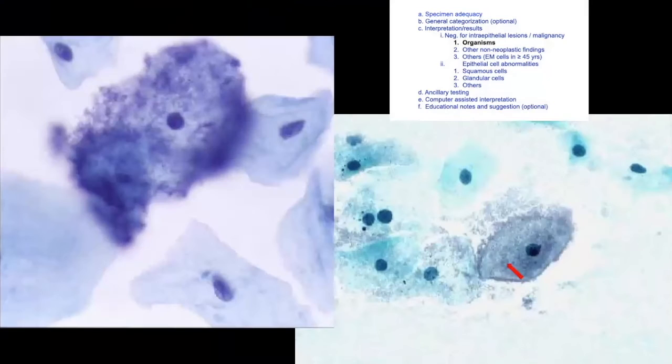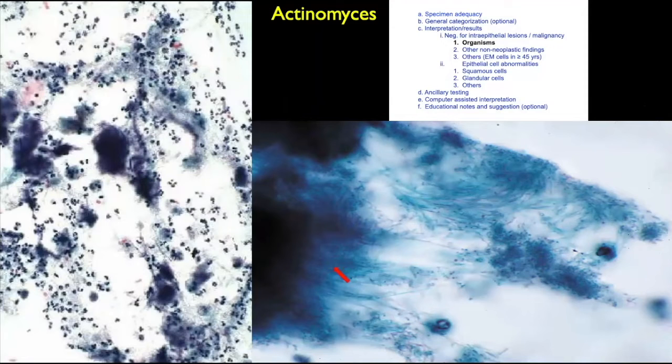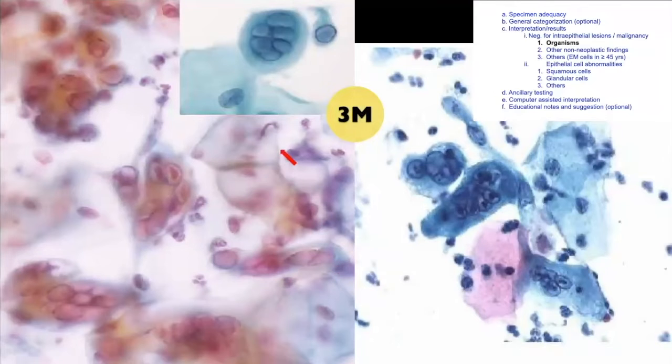Here you can see fuzzy organisms sticking to the cytoplasm — these are known as clue cells, an example of bacterial vaginosis. Here you can see a 'cotton candy' appearance — balls of filamentous organisms with increased neutrophils. These filamentous organisms may take a pink or green color and are characteristic of Actinomycosis. Always ask for the history of intrauterine devices, as Actinomycosis is more commonly seen in IUD users.